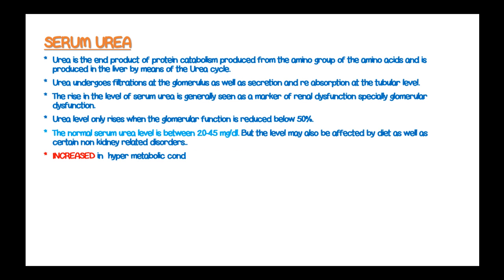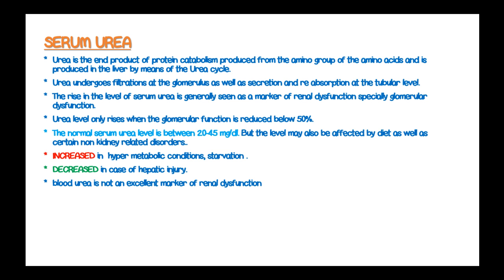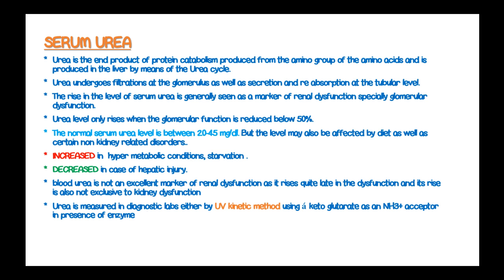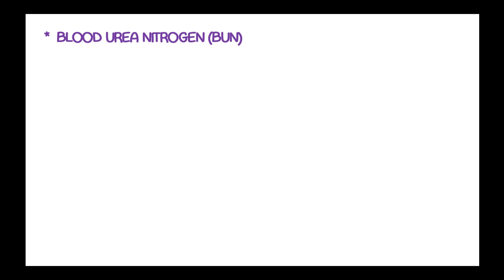Serum urea level is increased in hypermetabolic conditions and starvation, and decreased in cases of hepatic injury. Blood urea is not an excellent marker of renal dysfunction, as it rises quite late in the dysfunction and its rise is not exclusive to kidney function. Urea is therefore measured in a diagnostic lab aided by UV kinetic method using alpha-ketoglutarate, ammonium, in the presence of enzyme glutamate dehydrogenase.